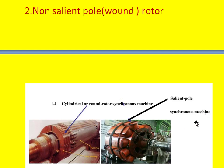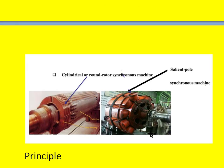This is the salient pole rotor. If you look at this, this is the rotor surface whereas these poles are protruding from the rotor surface. That is why these are called the salient pole rotor.